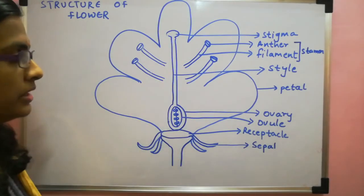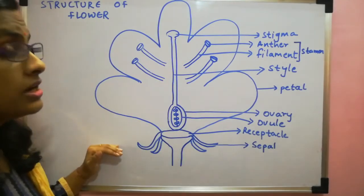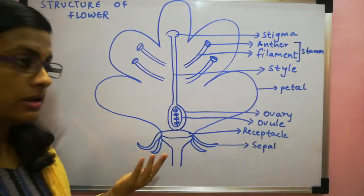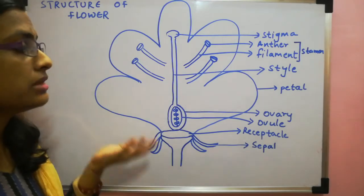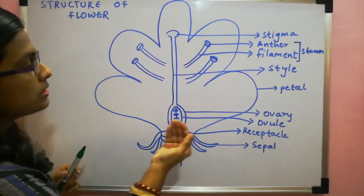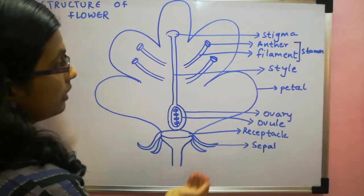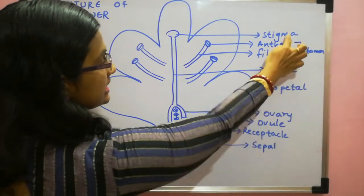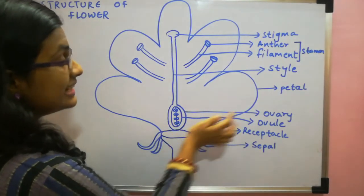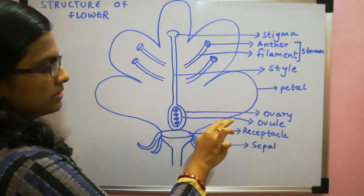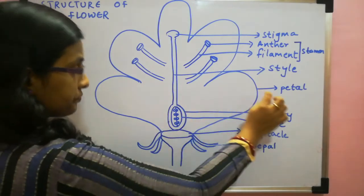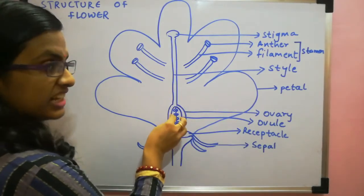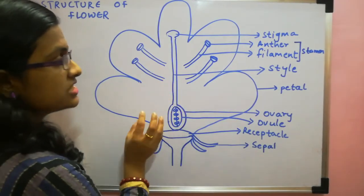Then the female reproductive part. Female reproductive part is also known as gynaecium. Gynaecium is made up of pistil or carpel. You can call it as pistil or carpel. Now this pistil is made up of three parts. Ovary, style and stigma. Ovary contains ovule and inside ovule egg is present. That is the female gamete. Ovary, the function of ovary is it contains the ovule where fertilization of male and female gamete takes place.